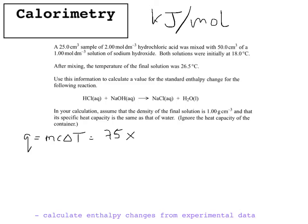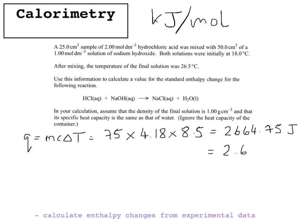The specific heat capacity of water is 4.18 — you'll always be given that number if you need it. Then multiply by the change in temperature: it started at 18°C and finished at 26.5°C, so the difference is 8.5. That gives 2,664.75 joules, which is 2.665 kilojoules rounded. So we now have our kilojoules value for the enthalpy change.